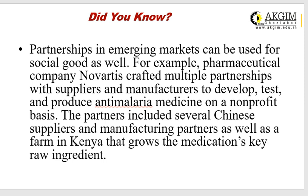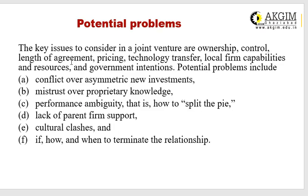Partnerships in emerging markets can also be used for social good. For example, pharmaceutical company Novartis crafted multiple partnerships with suppliers and manufacturers to develop, test, and produce anti-malaria medicine on a non-profit basis, including Chinese suppliers and a farm in Kenya that grows the key raw ingredient. The key issues in a joint venture include ownership, control, length of agreement, pricing, technology transfer, and government dimensions. Potential problems include conflict over asymmetric investment, mistrust over proprietary knowledge, performance ambiguity, lack of parent firm support, and cultural clashes.